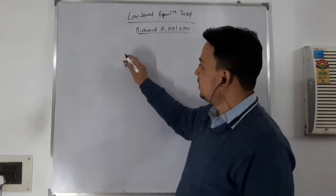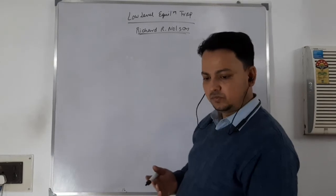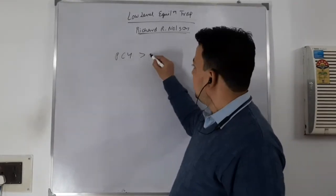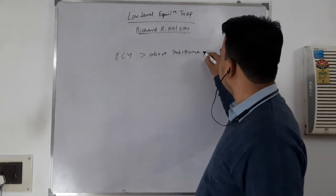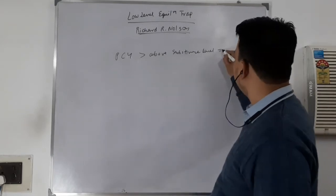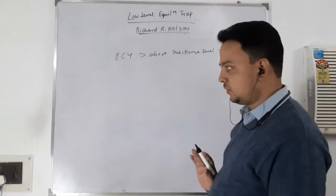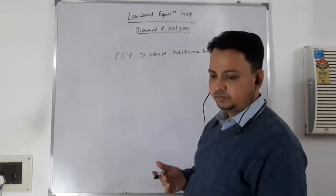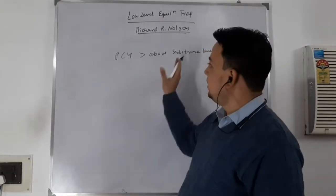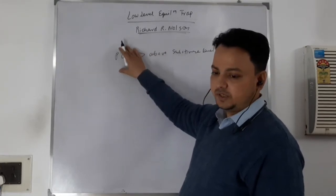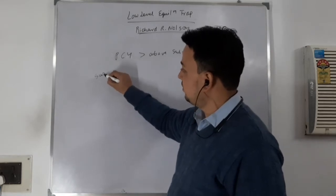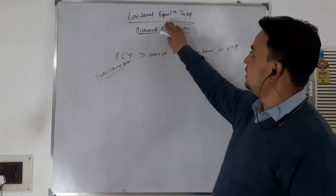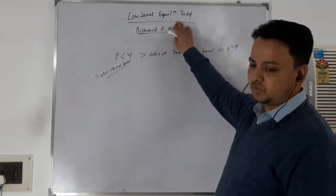In the Malthusian theory of population, there is a subsistence requirement — that is the basic minimum requirement for people to survive. When per capita income increases above subsistence level, it will increase population rapidly. This increase in population will eat up whatever increase in per capita income is taking place. So the economy will be stuck at subsistence level.